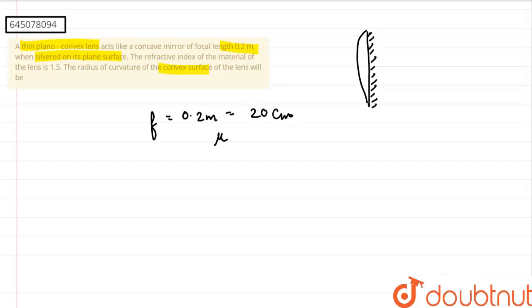and value of mu is equal to 1.5. Now, if we see this lens carefully, then it acts as a lens mirror system. It is made of one plano convex lens plus one plane mirror.